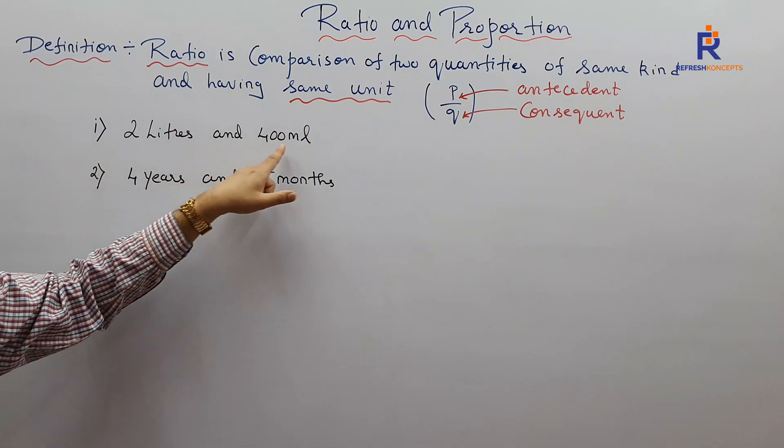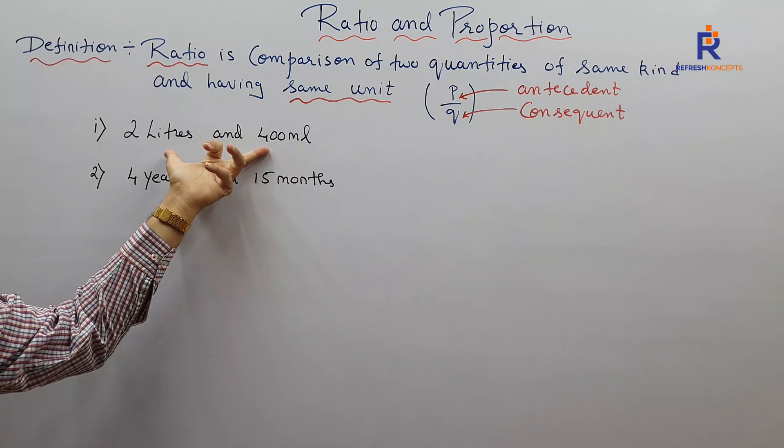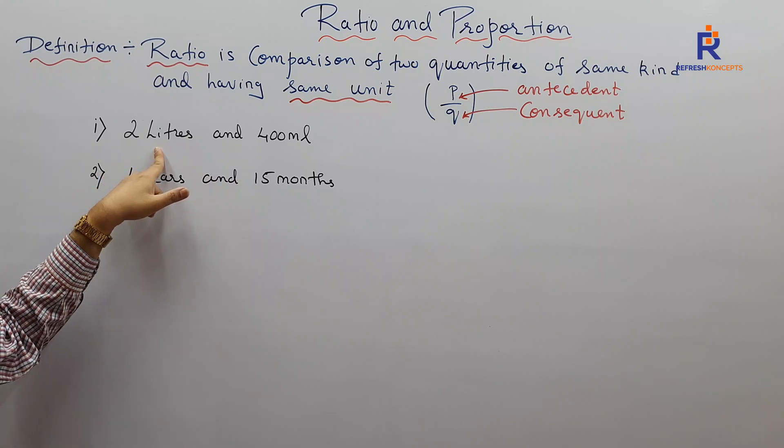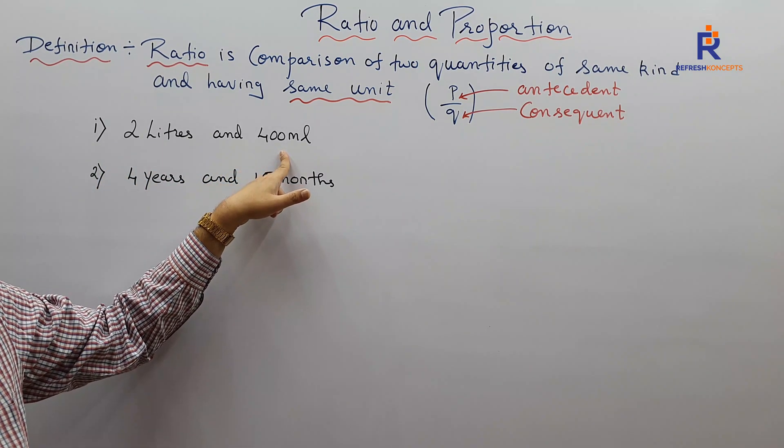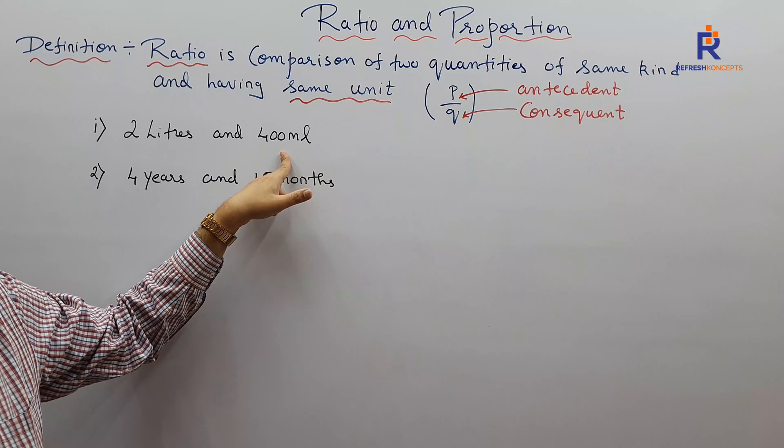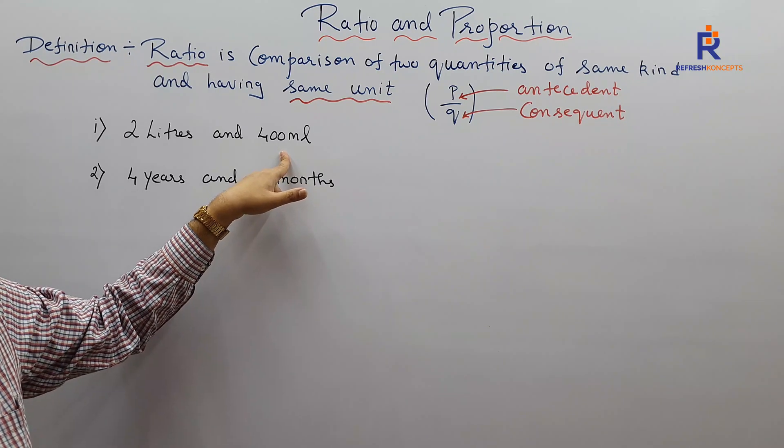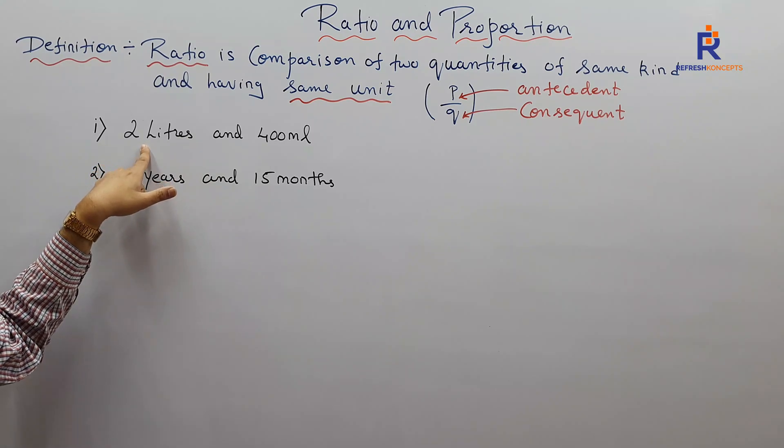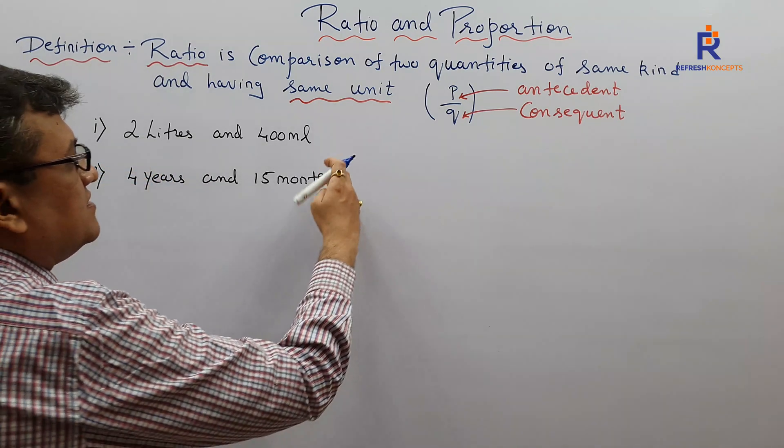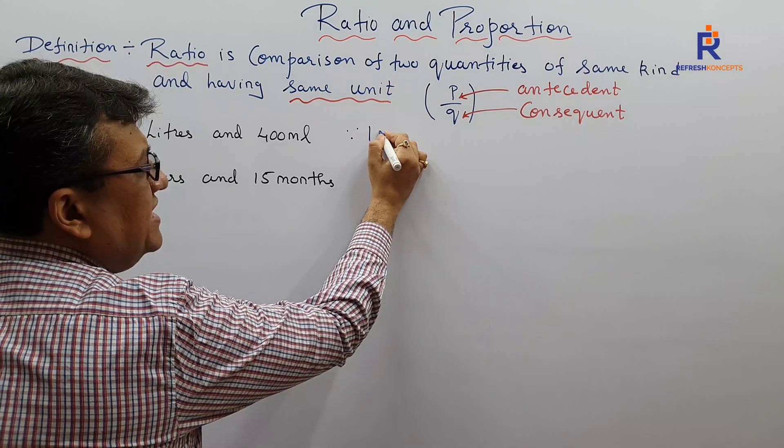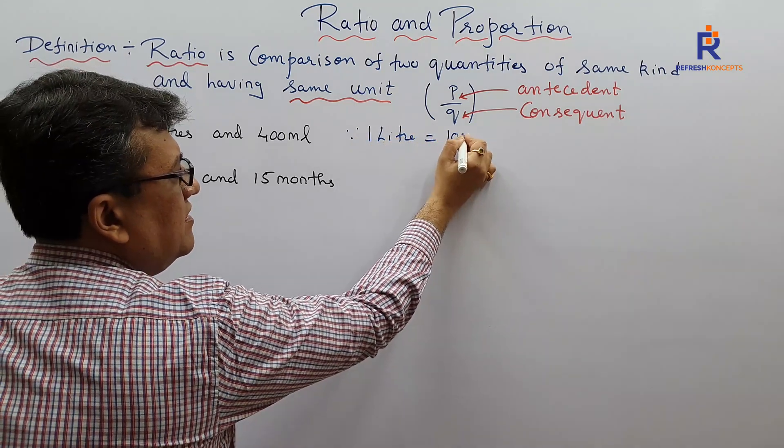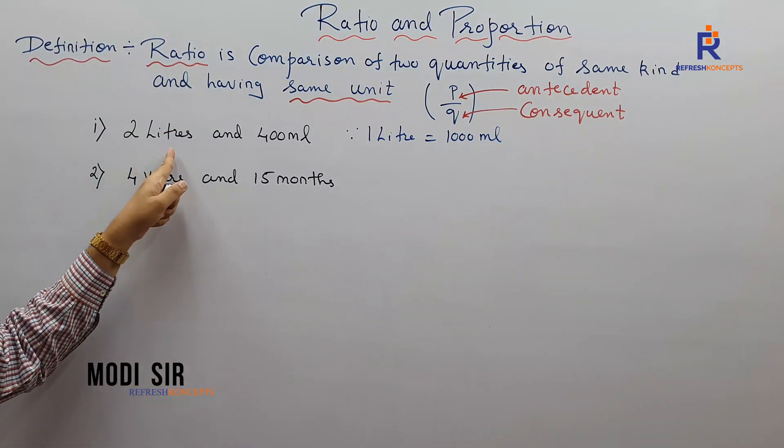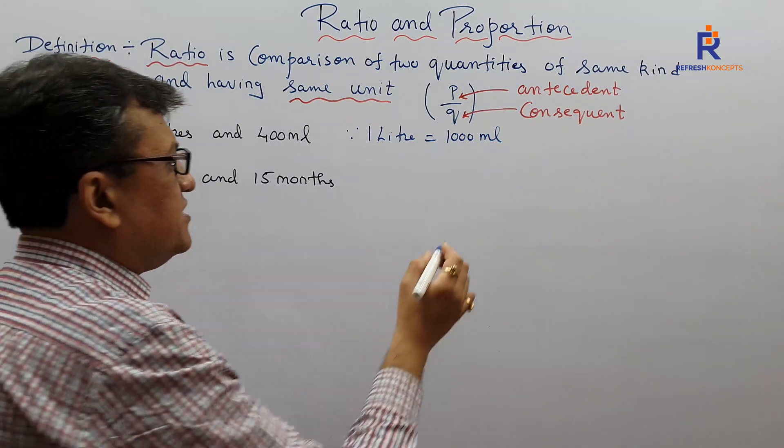So I need to convert either these liters into milliliters or these milliliters into liter. Choice is yours. What I'll do, I'll prefer this liters into milliliters, since one liter is 1000 ml. What shall be the answer? Two liters is 2000 ml, so the answer is going to be 2000 upon 400.